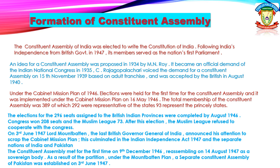The Constituent Assembly met for the first time on 9th December 1946. Reassembling on 14th August 1947 as a sovereign body, as a result of the partition under the Mountbatten Plan, the Constituent Assembly of Pakistan was established on 3rd June 1947.